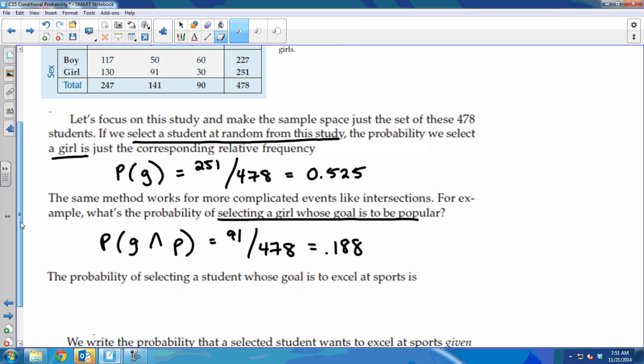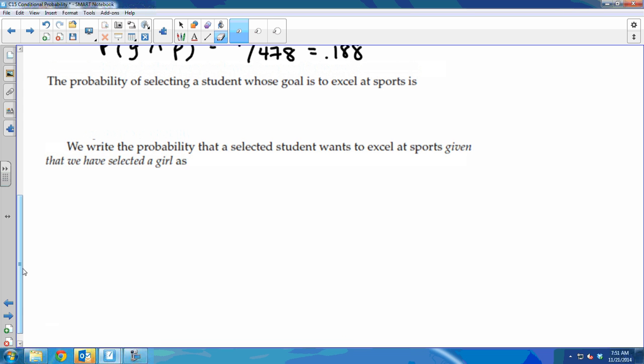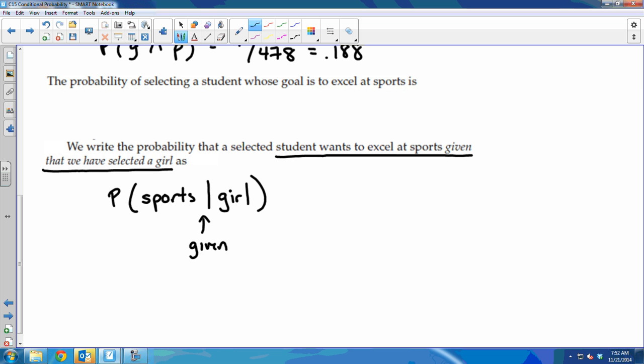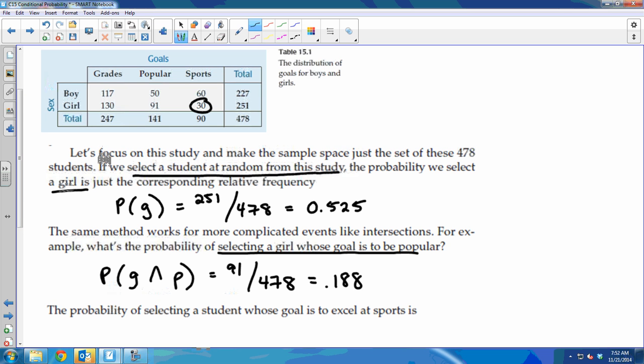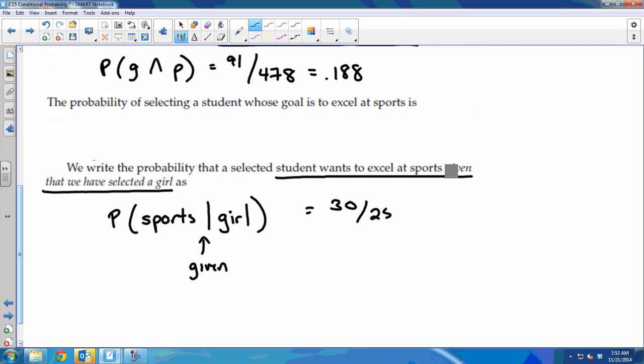A table is really helpful for finding these conditional probabilities. For example, what if we want to find the probability that a student wants to excel at sports given that we have selected a girl? So far, we've been taking it out of everybody, the 478. But this is narrowing that focus. It's saying that we have already selected a girl. So we do the probability of sports given a girl. This is the proper notation, that just means given. From the table, it's really easy. We find the number of students that wanted to be good at sports and are girls, which was 30. But this time, it was given that it was a girl. So we're only taking it out of the total of girls, out of 251. So 30 out of 251 is 0.12.